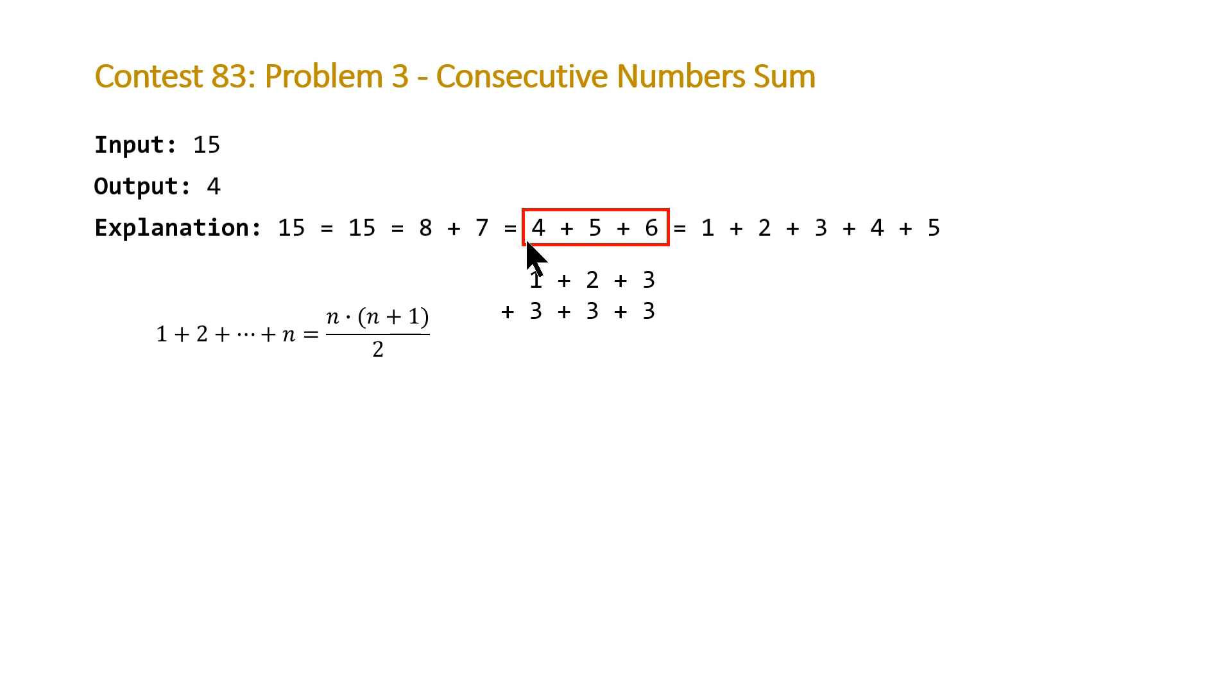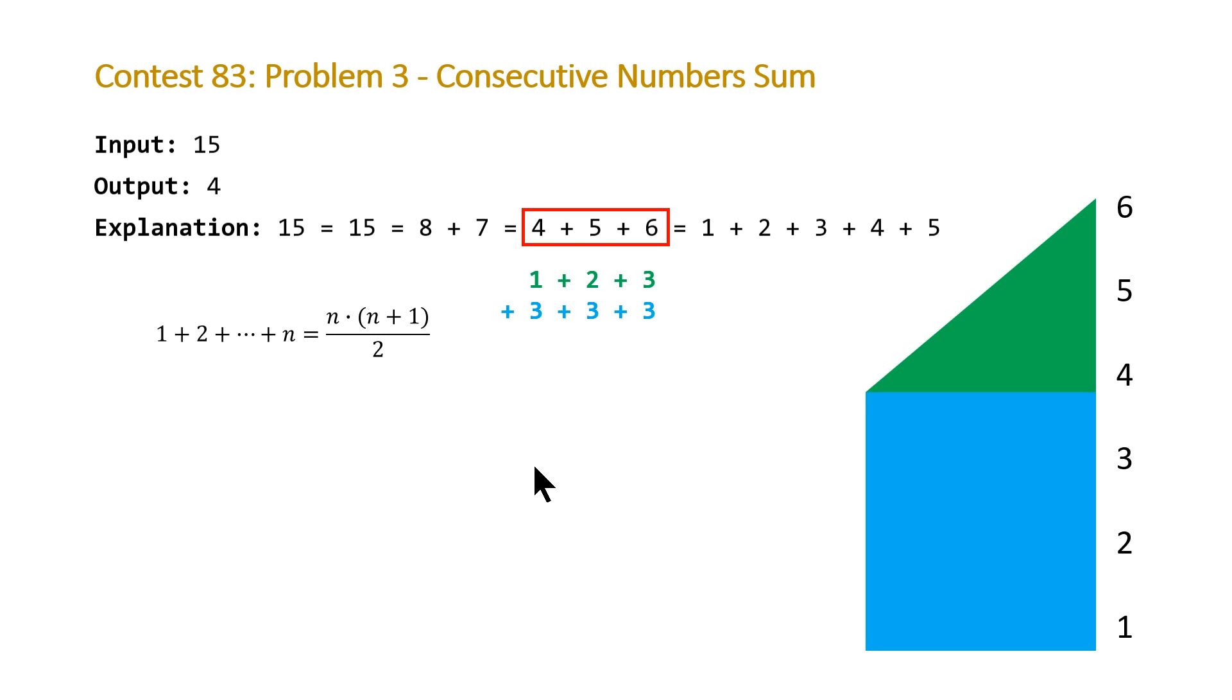So 4 plus 5 plus 6 can be rewritten as 1 plus 2 plus 3, and then extracting out a 3 from each of these numbers. You can think of this in two components. We have the increasing part of the sequence, and then we're extracting out a constant from each number. If we multiply this constant by the length of our sequence and use this formula, we can get a formula for calculating the total sum of this sequence.